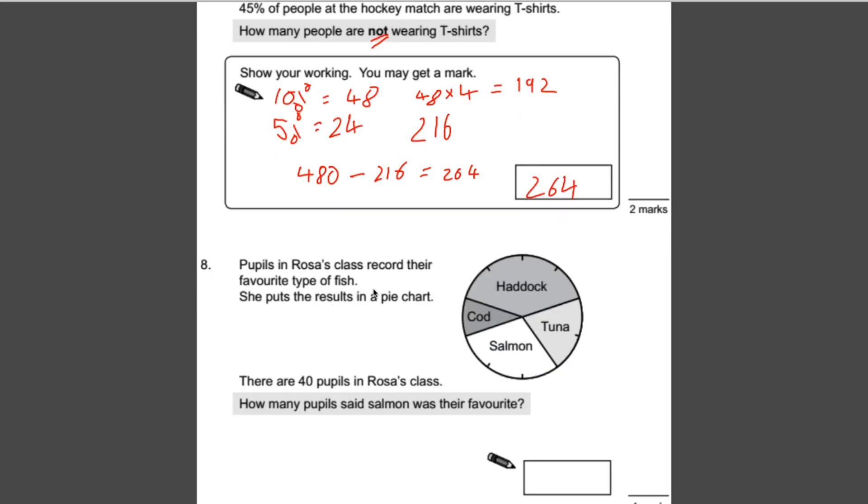Last question, number 8. Pupils in Rose's class record their favorite type of fish. She puts the result in a pie chart. There are 40 pupils in Rose's class. How many people said salmon was their favorite? First we need to work out how much each chunk of this pie chart is worth. If we look carefully there are 10 individual chunks to make this pie chart. If there's 40 in total, each chunk is going to be worth 4, because that's 40 divided by 10.